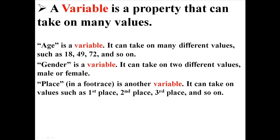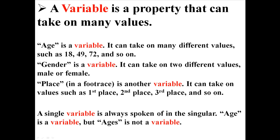And place, like in a foot race, is another variable because it can take on values such as first, second, third, and so on. Notice that variables are always spoken of in the singular. For example, age is a variable, but ages is not a variable. So keep that in mind.